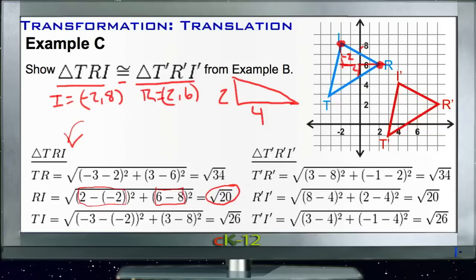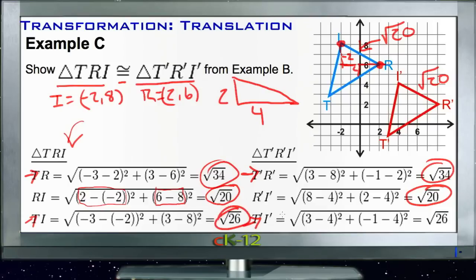Correspondingly, side R'I' is also √20. If we compare each of the three sides, we can see that each of the three pairs of sides—TR and T'R' are both √31, and TI compared with T'I' are both √26—all three sides of our two triangles are exactly the same, which means that the two triangles are indeed congruent since that's the definition of congruency.